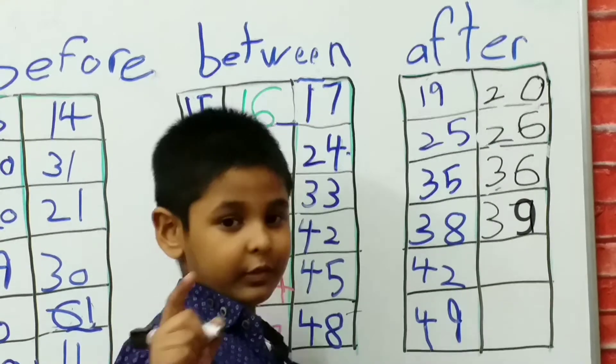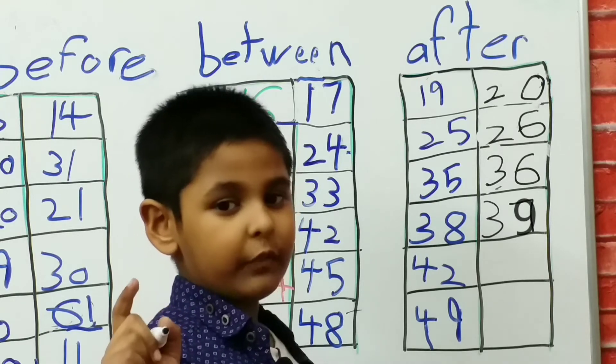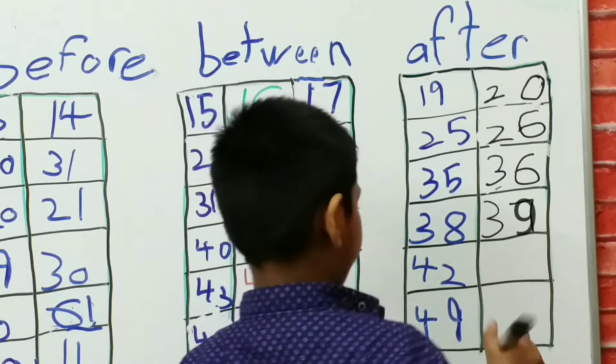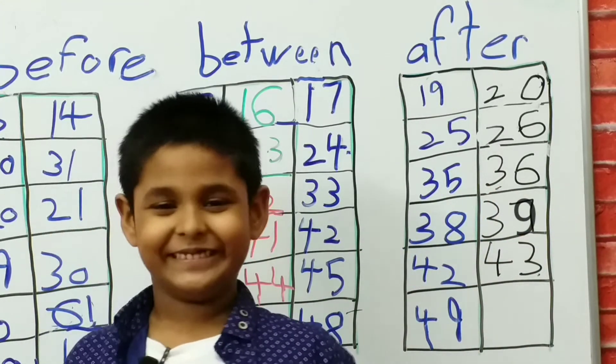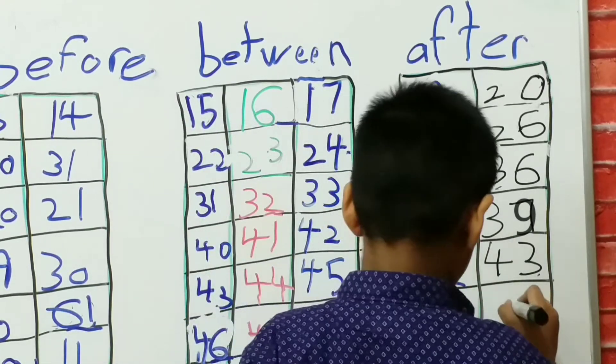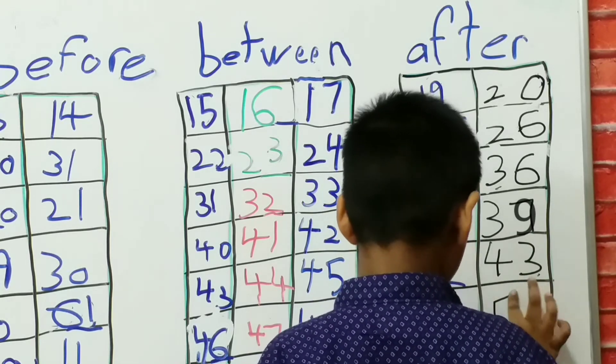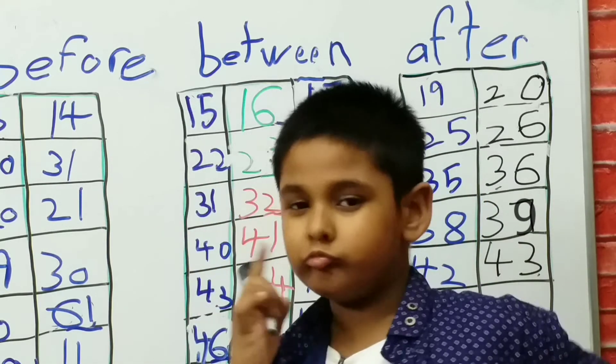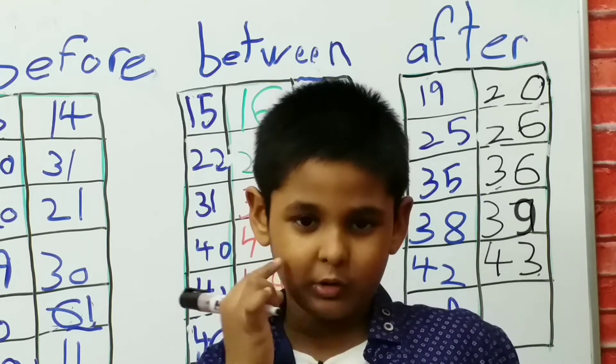Now it's 42 after what? 42 after 3, 4, 4, 3, 43. 4, 3. Good! Now it's 49 after 50. Nope, 30. 50, 30, 50, 30, 50. Nope, 50.